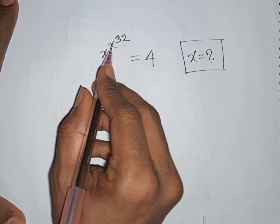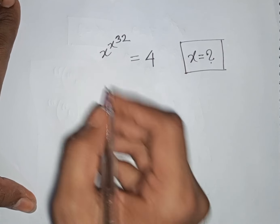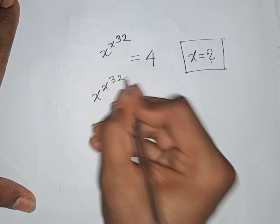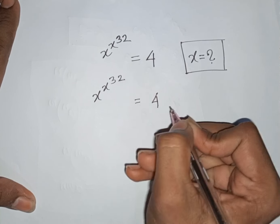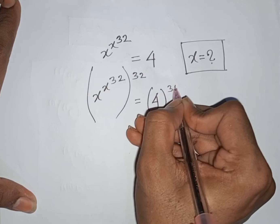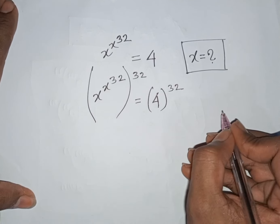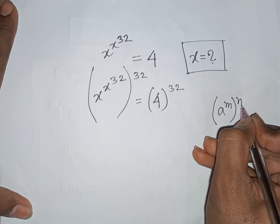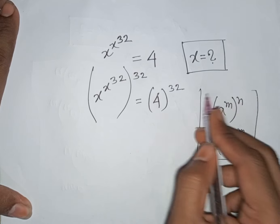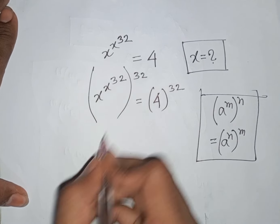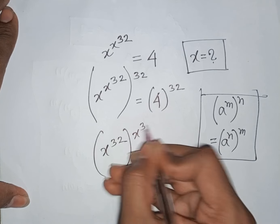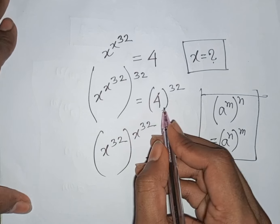Second problem: x power (x power 32) equals 4. Find the value of x. We raise both sides to the power of 32, giving (x power 32) to the power of (x power 32) on the left, and 4 to the power of 32 on the right, so x equals 4 power 32.